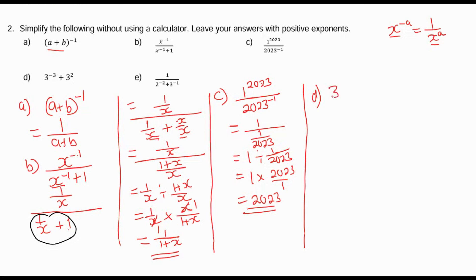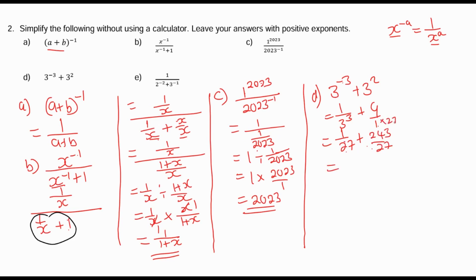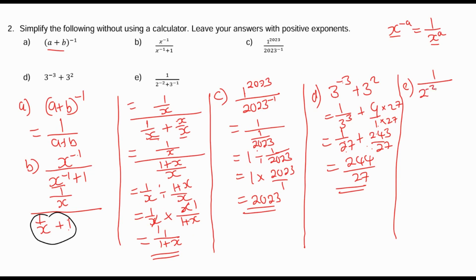For part d, we have 3 to the power negative 3 plus 3 squared. 3 to the power negative 3 is 1 over 27, and 3 squared is 9. So we get 1 over 27 plus 9 over 1. Multiplying 9 by 27 gives 243 over 27. Adding numerators: 1 plus 243 equals 244 over 27.